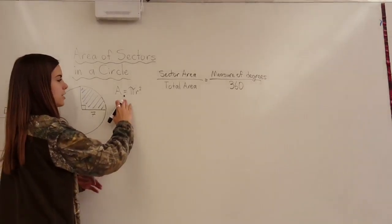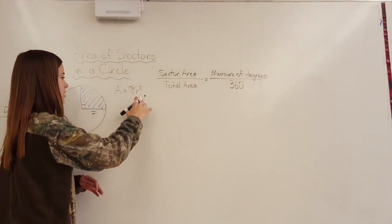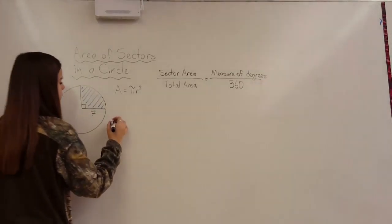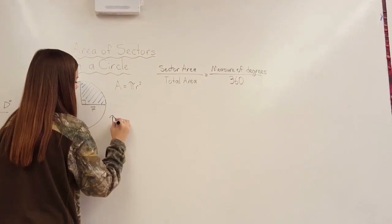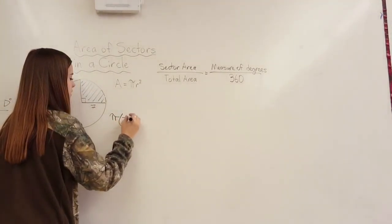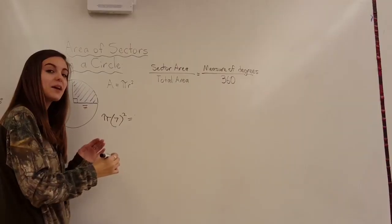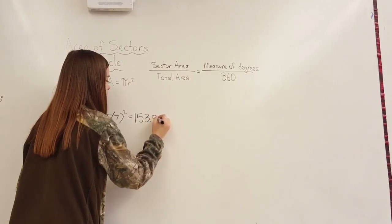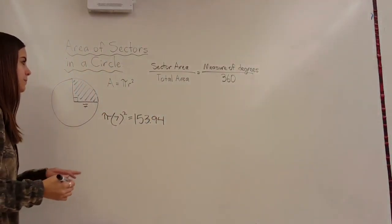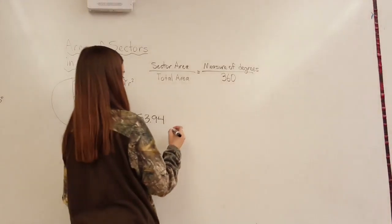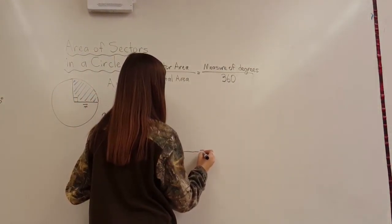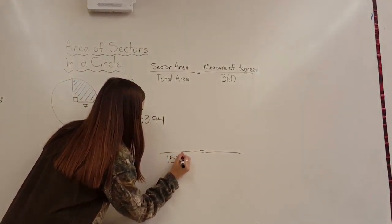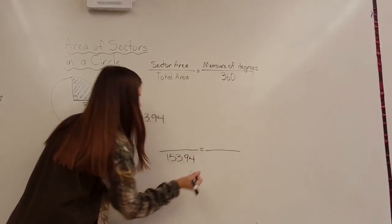So we're going to start with the total area of the circle, which all we need for that is the radius. So we're going to do pi times our radius, which is 7, and then square. It will all multiply out to be 153.94. So that's what we have in that part of our equation.